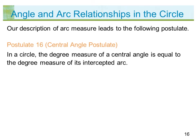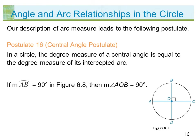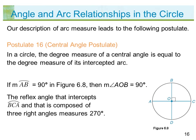Postulate 16, the Central Angle Postulate: in a circle, the degree measure of a central angle is equal to the degree measure of its intercepted arc. If the measure of arc AB equals 90 degrees in figure 6.8, then the measure of angle AOB equals 90 degrees. The reflex angle that intercepts arc BCA, composed of three right angles, measures 270 degrees.